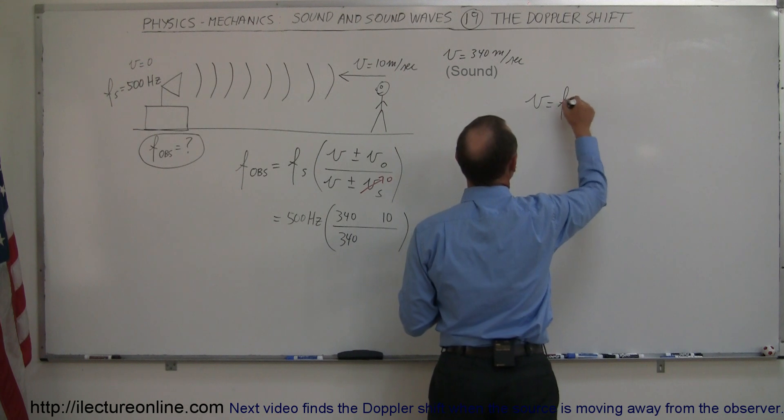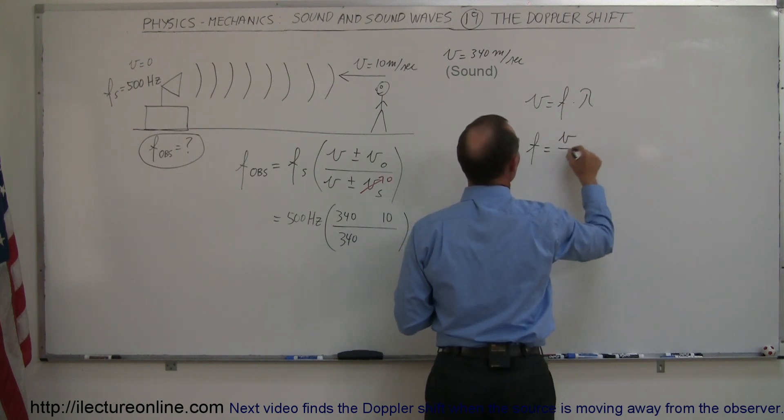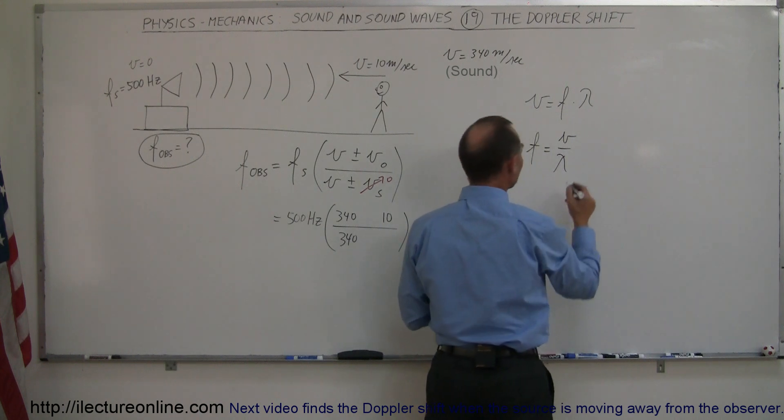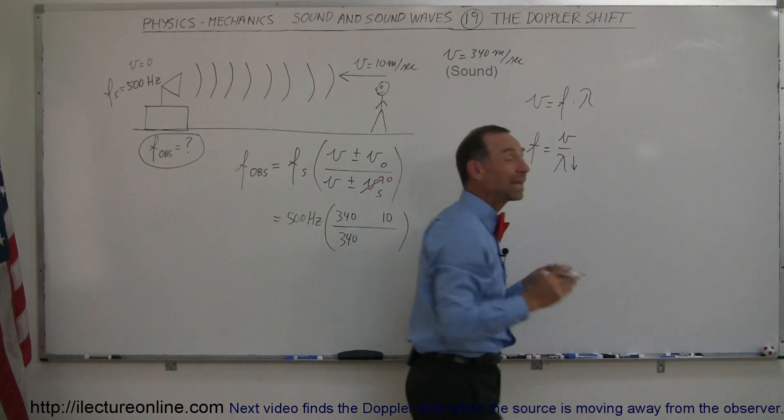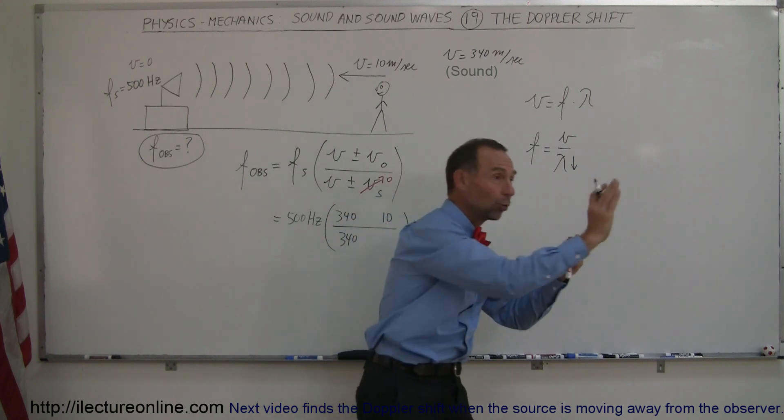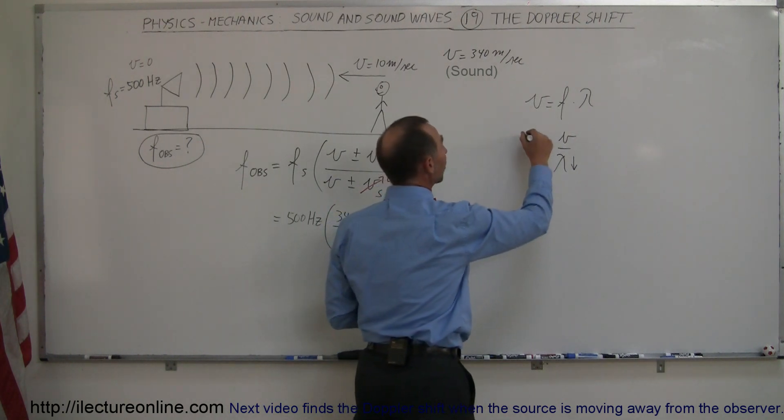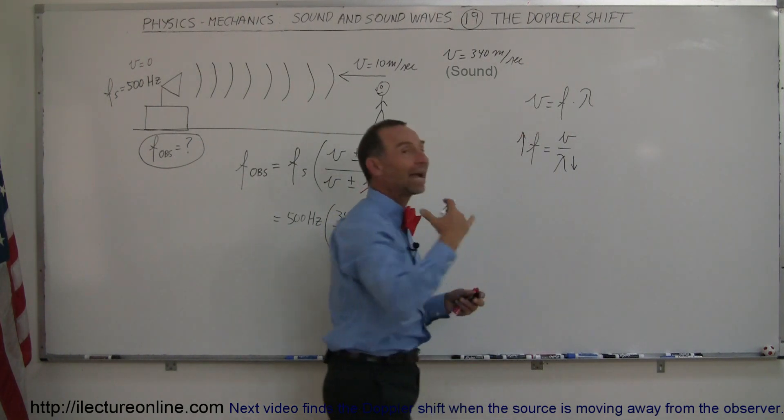We have velocity is equal to frequency times wavelength. So the frequency is equal to the velocity divided by the wavelength. So here, if the wavelengths get smaller or they appear to get smaller because he's moving towards the waves, that causes the frequency to increase, higher frequency.